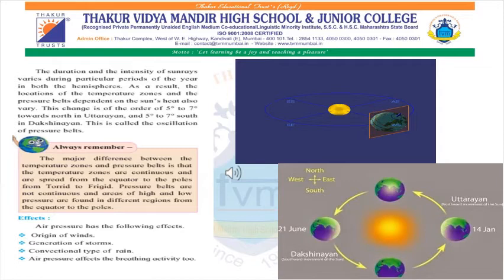Things to remember: the duration and intensity of the sun rays varies during particular periods of the year in both hemispheres; as a result, the location of temperature zones and pressure belts also varies. This change is of the order of 5 degrees to 7 degrees towards the north in Uttarayan and 5 degrees to 7 degrees south in Dakshinayana — this is called the oscillation of pressure belts. The major difference between temperature zones and pressure belts is that temperature zones are continuous from the equator to the poles, while pressure belts are not continuous — areas of high and low pressure are found in different regions from the equator to the poles.